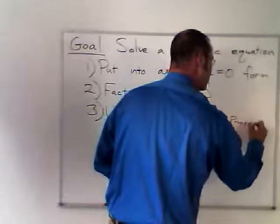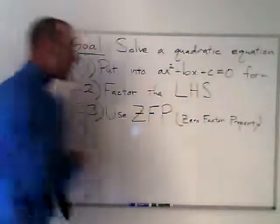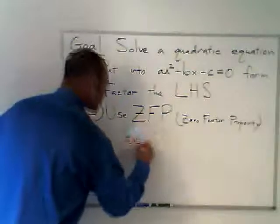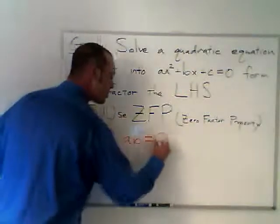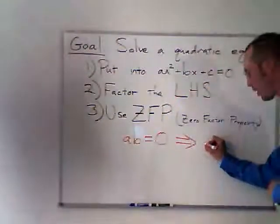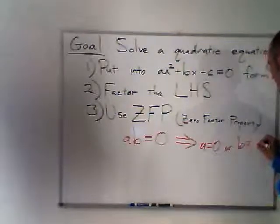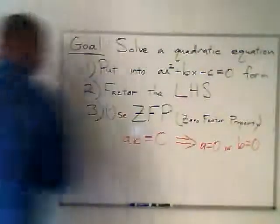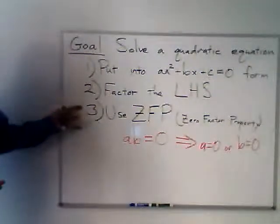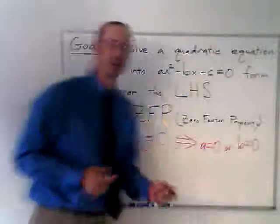And this is a good place to review what exactly that is. It simply says that we have an expression, A times B equals zero. This implies that either A is equal to zero or B is equal to zero. And we'll use that once we've factored the left-hand side to break our quadratic equation into two linear equations.